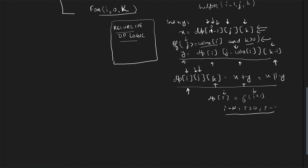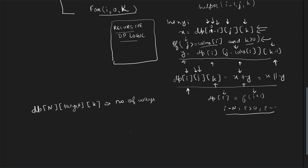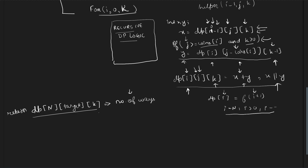At the end, if you have used X plus Y, your DP[n][target][k] will contain the total number of ways this problem can be solved. If it is greater than 0, the answer is true; if it equals 0, the answer is false. If you used X or Y, it will only contain 0 or 1 — whether it's possible or not. Both are correct. In C++, you can directly return this value because if it is greater than 0, it will return true; otherwise, it will return false.